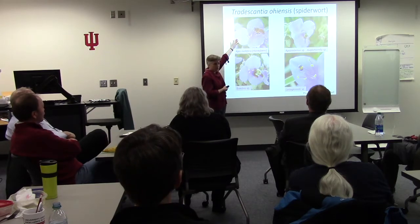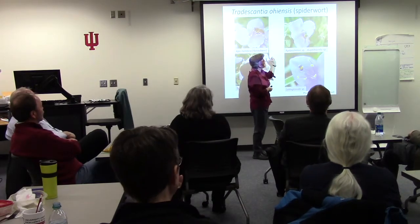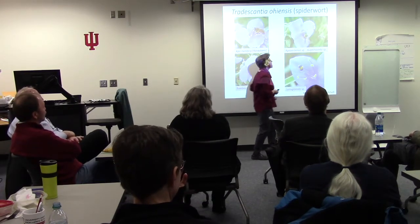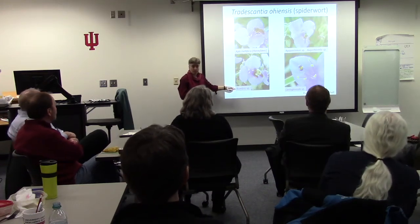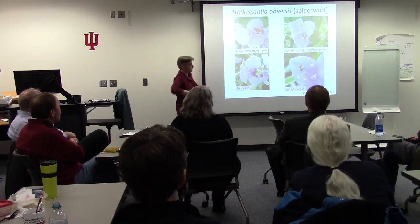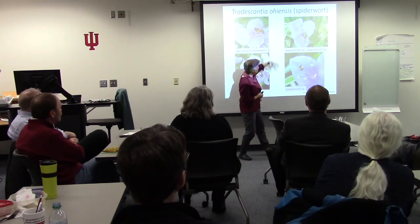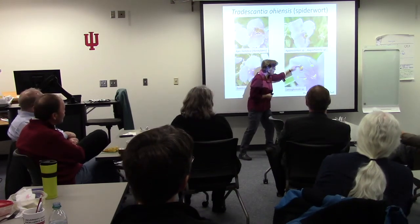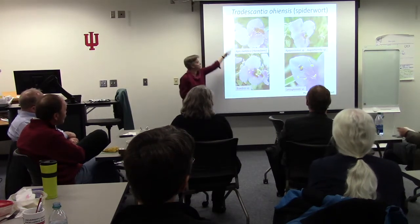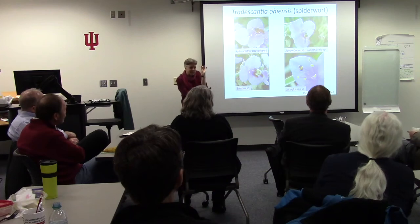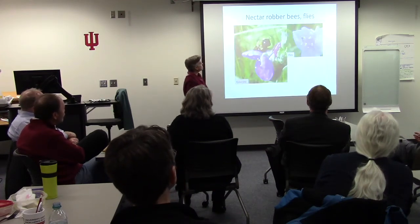We also have nectar robber bees — these big burly guys chew a hole in the base of the flower, get the nectar, but don't pollinate. There are also a lot of flies out there. What we did is we recorded observations from six different plant species: milkweeds, iris, penstemon, beard's tongue, obedient plant Physostegia, cup plant Silphium, and Tradescantia.